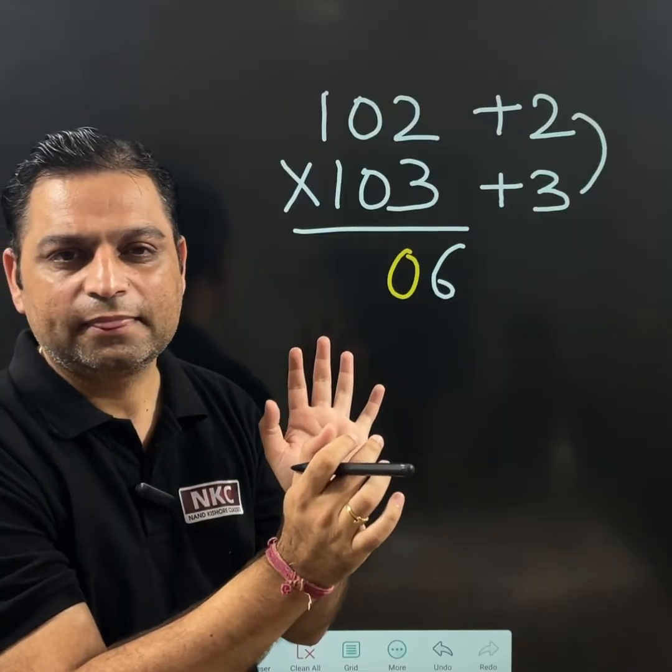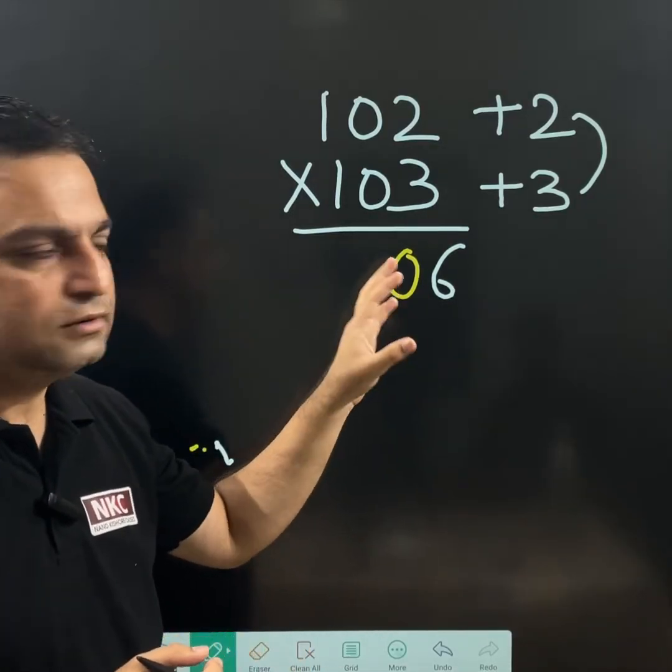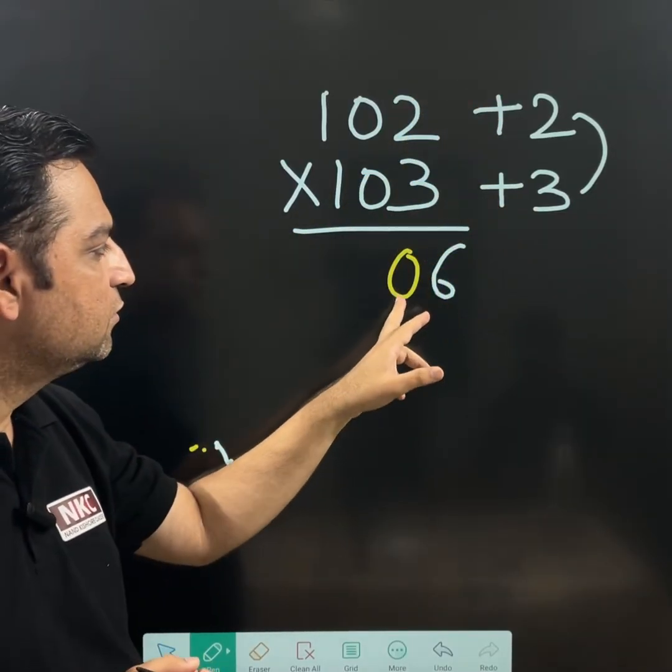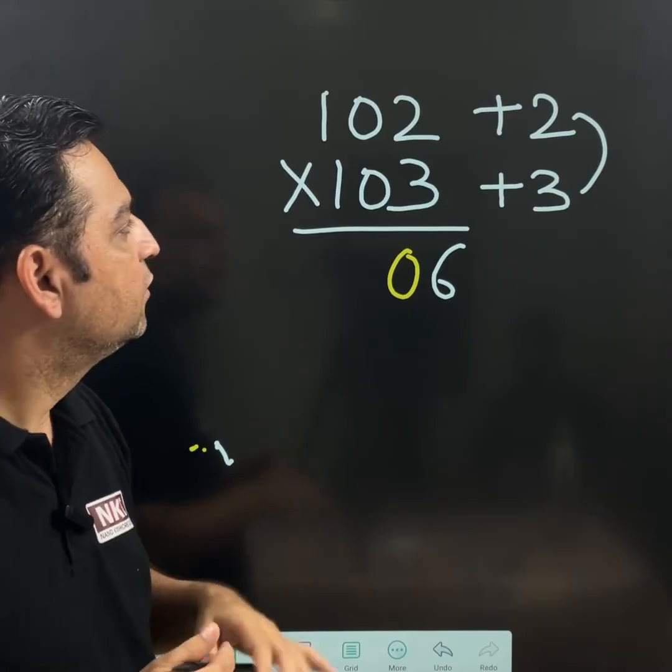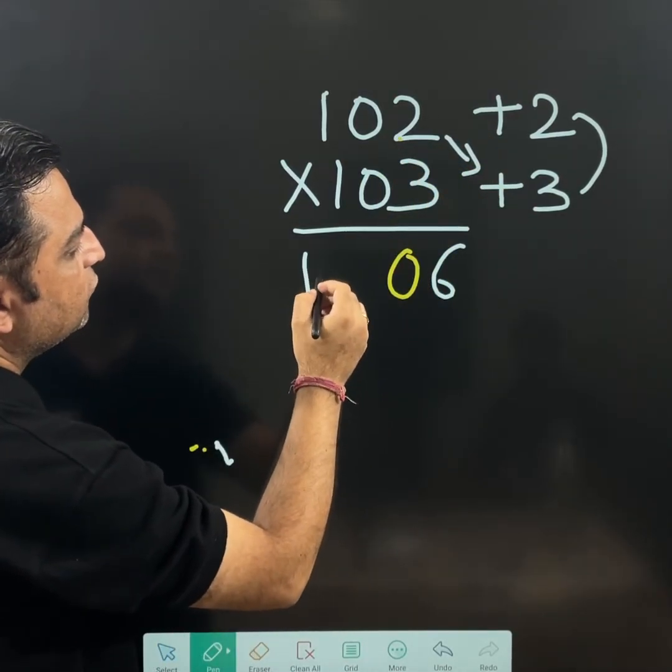Because base is 100. Base 100 contains 2 zeros. I need 2 digits here. If at all, I am getting a single digit multiplication. Just add 0 along with it. Else, process remains same.